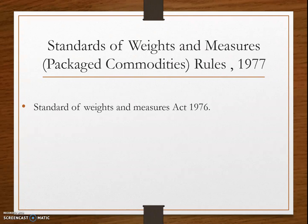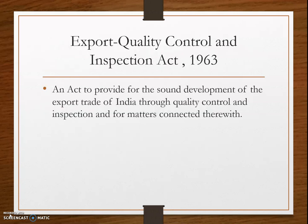The Packaged Commodity Rules 1977 were introduced under the Standards of Weights and Measures Act 1976. This act aims to regulate trading of pre-packed commodities, ensure correct information about the commodity in the package, and ensure availability of the correct quantity.